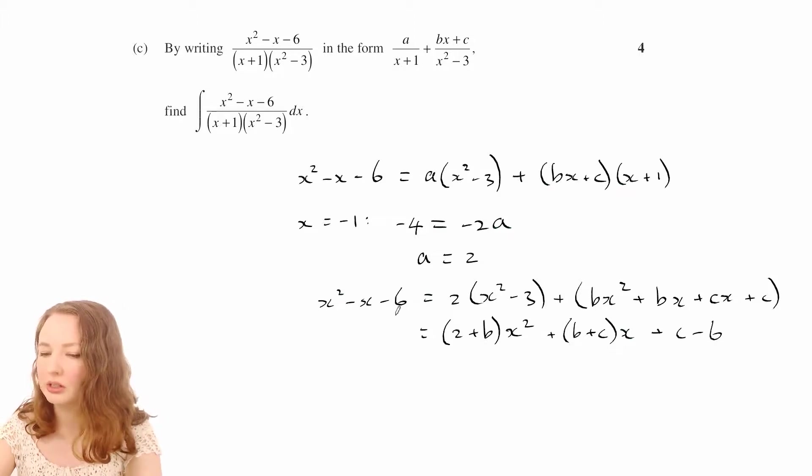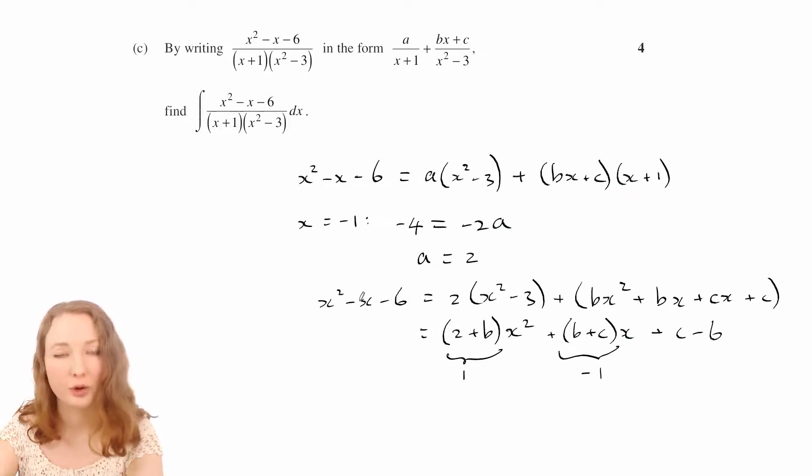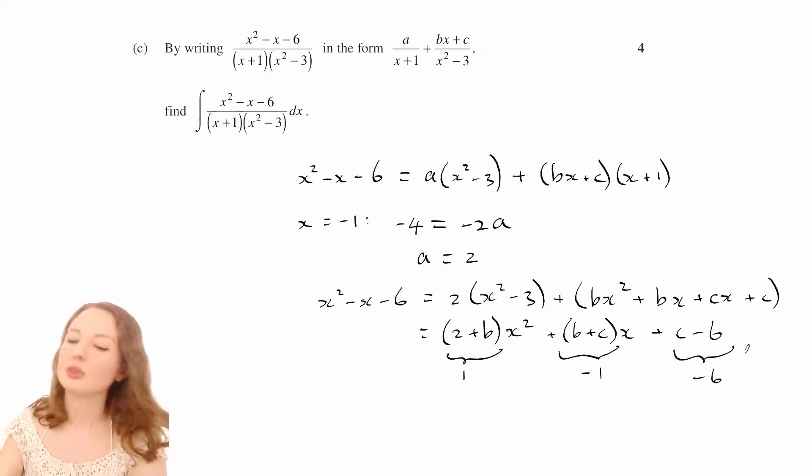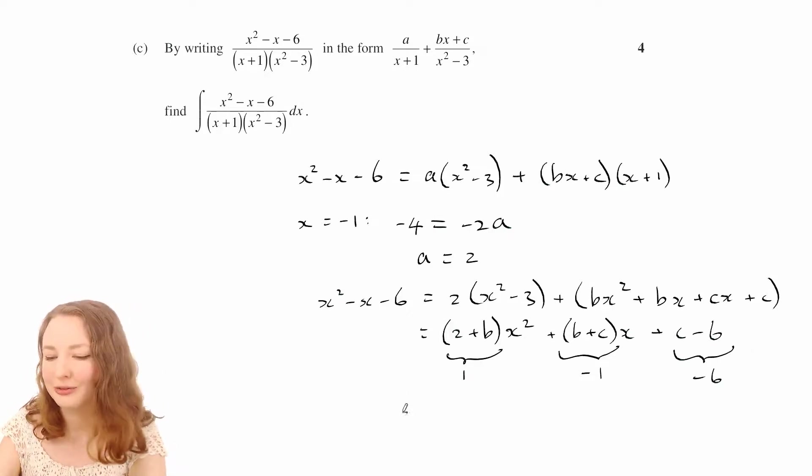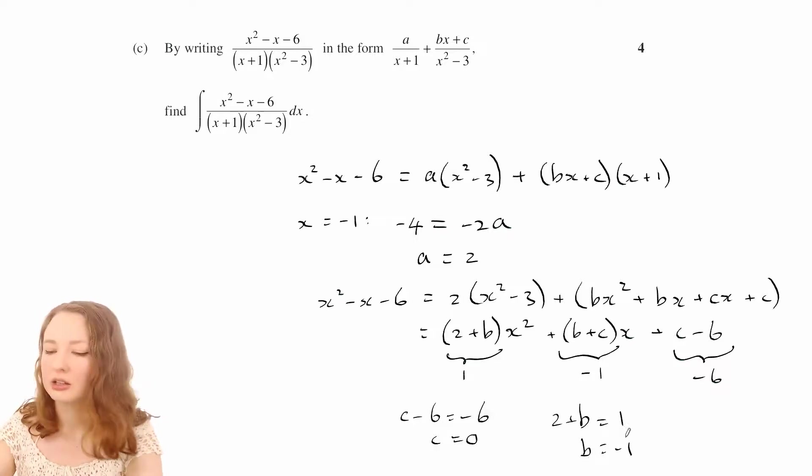So we know because this is equal to this, we know that this bit has to be 1, because that's the coefficient here. This bit has to be negative 1, because that's the coefficient on the x. And this bit has to be equal to negative 6. So that one's really easy. If c minus 6 equals negative 6, then c equals 0. And then we've also got 2 plus b equals 1, so b is negative 1. And just to check that, let's plug those in there and make sure that works. So yeah, it does.